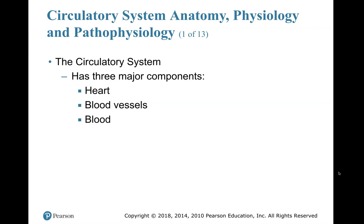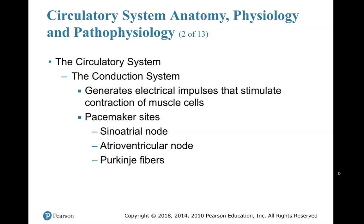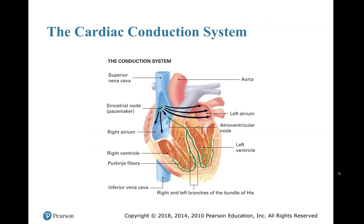The conduction system generates electrical impulses that stimulate contraction of muscle cells. Pacemaker sites are the sinoatrial node, the atrioventricular node, and the Purkinje fibers. The sinoatrial node is the pacemaker of the heart. Here's the conduction system — you see the superior and inferior vena cavas, the aorta, and right there, the sinoatrial node, the pacemaker, giving off that electrical impulse.